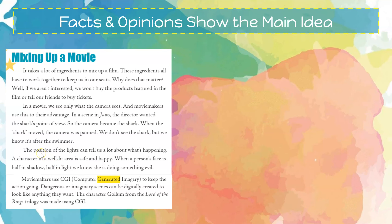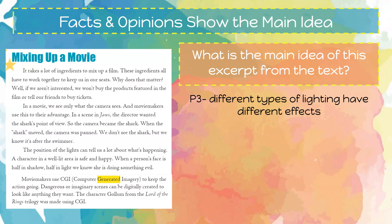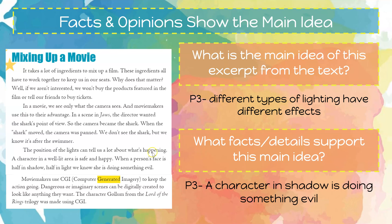Let's keep reading. 'The position of the lights can tell us a lot about what is happening. A character in a well-lit area is safe and happy. When a person's face is half in a shadow and half in light, we know that she is doing something evil.' The main idea of this paragraph is that different types of lighting have different effects. The supporting fact is that when a person's face is half in shadow and half in light, we know that character is doing something evil — a fact we see in many different movies.